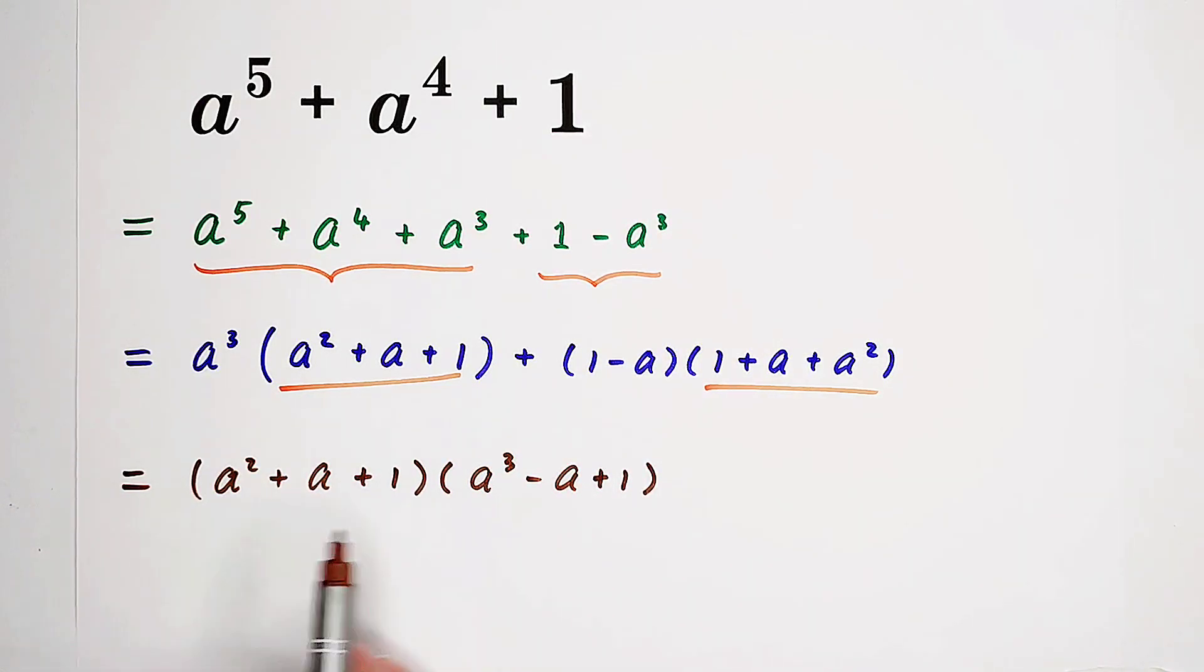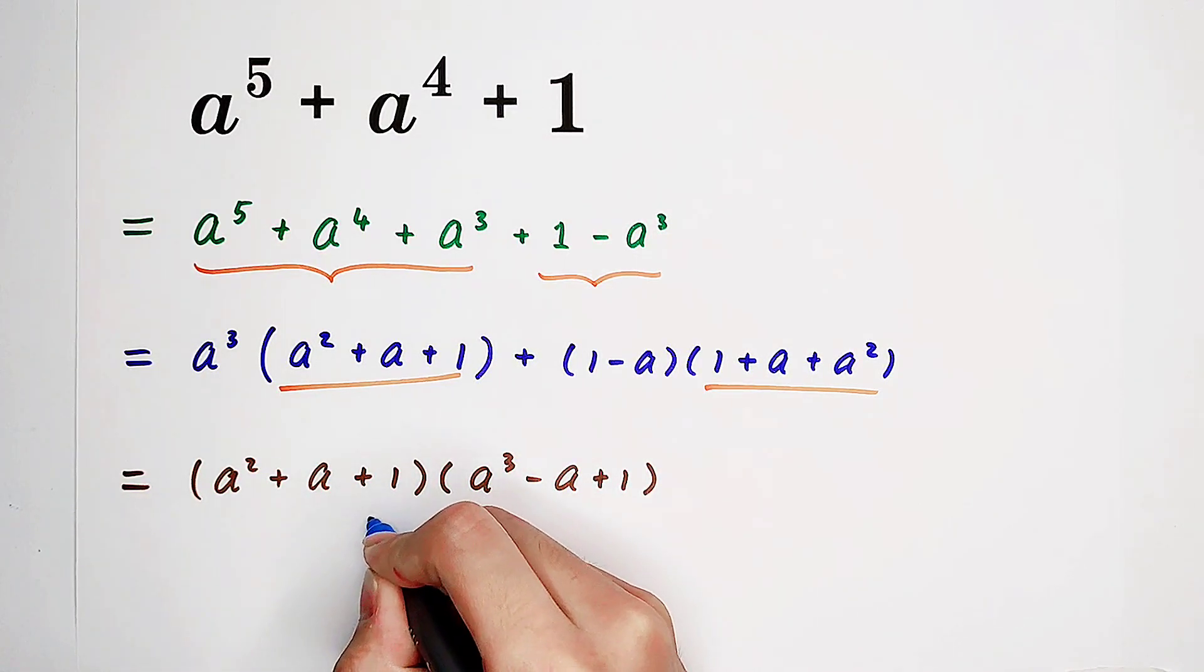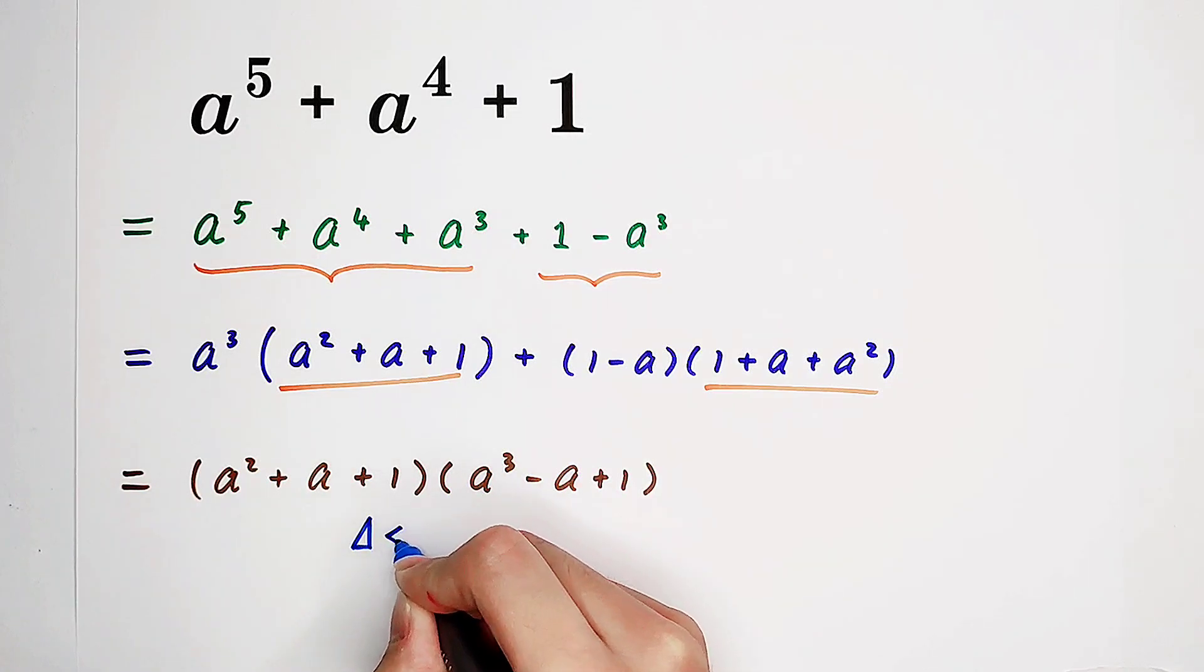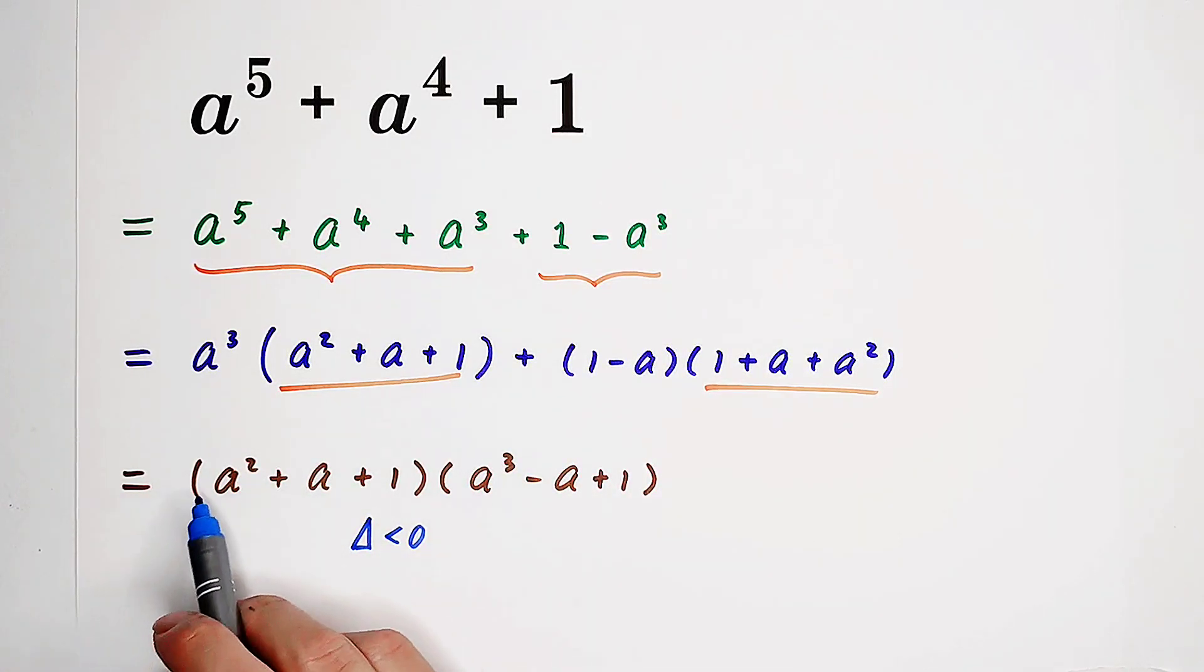Because none of these two parts can be factorized further. For this one, the delta is smaller than 0. b squared minus 4ac, 1 squared minus 4 times 1 times 1. That's negative 3, smaller than 0, obviously.